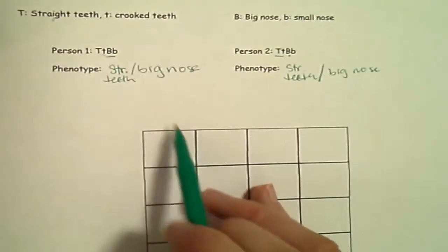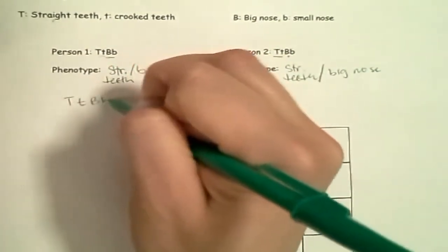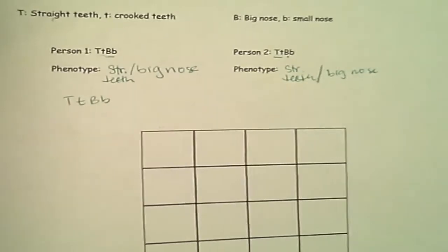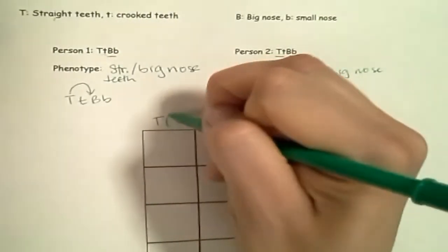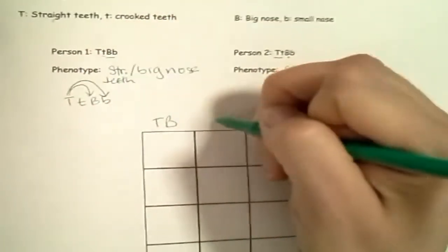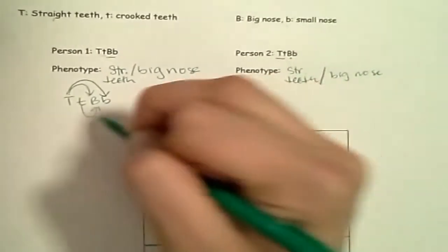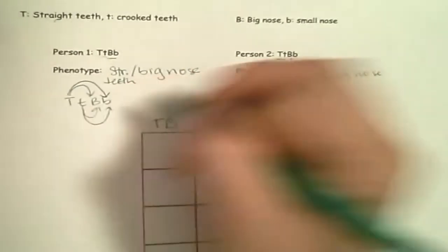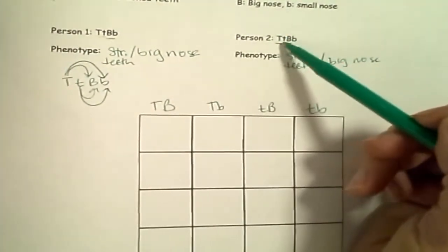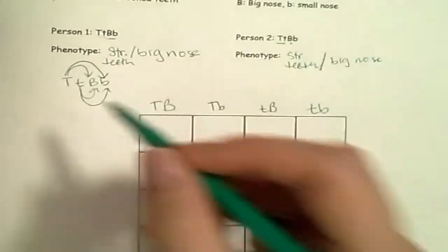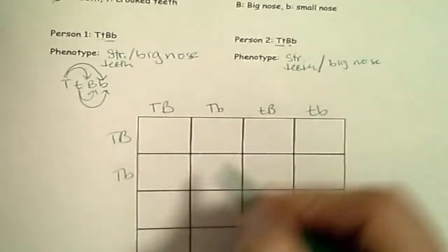What are our possibilities? Person one: big T, little t, big B, little b. We multiply out their options: big T big B, big T little b, little t big B, little t little b. Person two is exactly the same thing, so it's going to be the same four combinations.